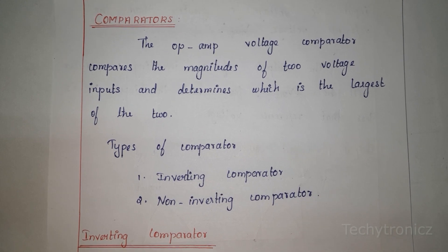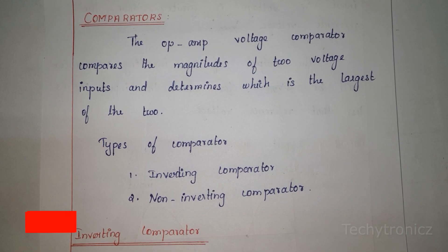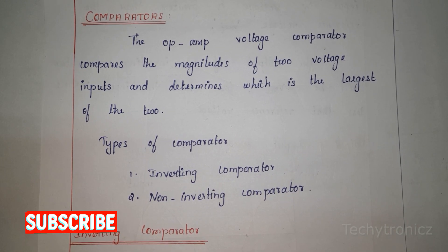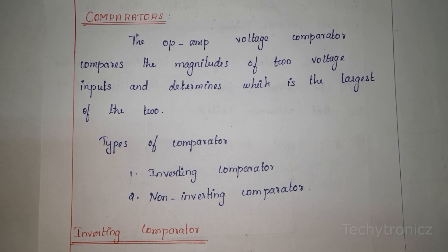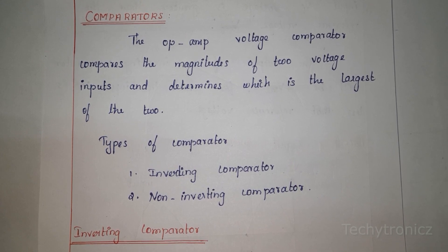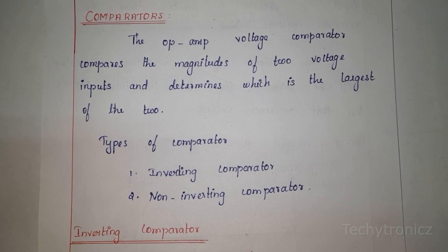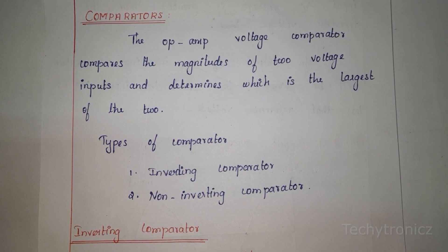Welcome friends. In this video we are going to learn about comparators. Normally, what is a comparator? A comparator is an electronic circuit which compares two inputs and produces an output. In this section, we discuss about op-amp based comparators.